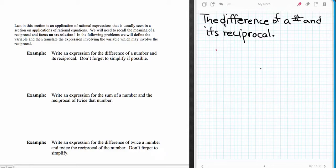Translating the difference of a number and its reciprocal. We're going to let x equal the number, and then the reciprocal is 1 over that number. So the reciprocal equals 1 over x.